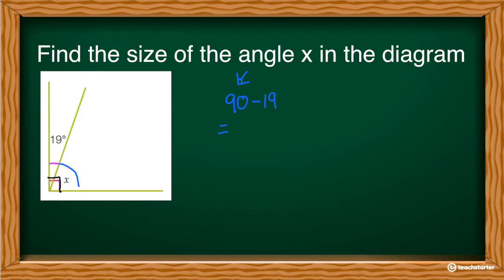If I do that, I end up with 71. So that tells me that X equals 71 degrees. That simple. Let's try one more.